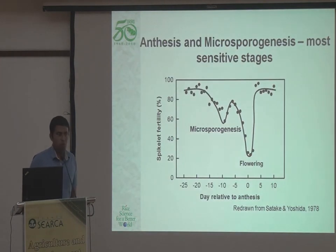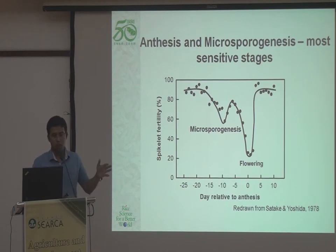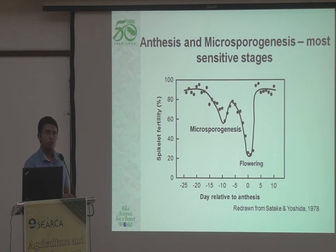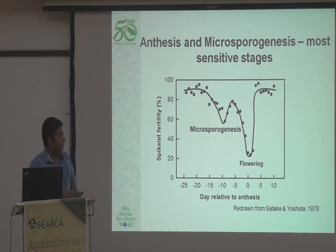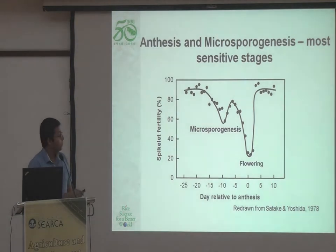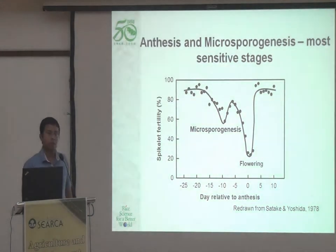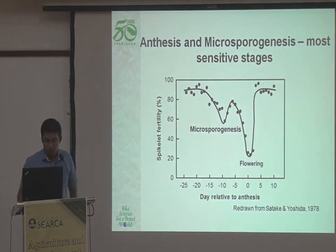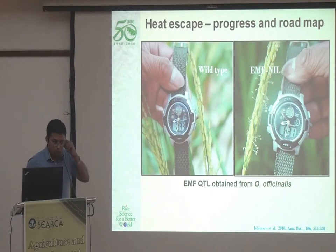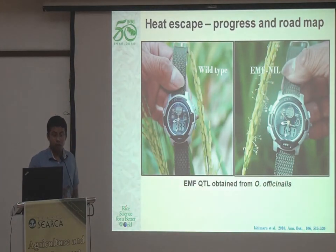Temperature stress has a major negative impact during the reproductive stages. As you can see in this slide, flowering is the most sensitive stage to high temperature stress. Even a few hours of high temperatures beyond critical thresholds during flowering can result in a significant decline — to the extent of even 75 to 80%. The second most important stage is the microsporogenesis stage, which happens about 9 to 10 days before flowering, and that also results in significant decline, though not to the same extent as flowering.